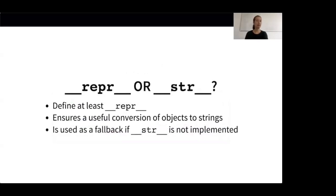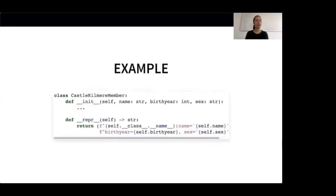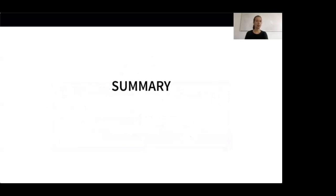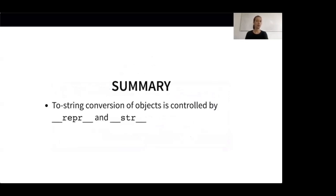Let's apply this knowledge and add a __repr__ method to our CastleKilmier member class. We implement our __repr__ method to hold all important information, like the name of the class, the name of the instance, the birth year and so on. This gives us a much nicer representation of our Bromley instance. The __repr__ method also allows us to recreate the Bromley instance from its string representation. To summarize: we have two methods for converting objects to strings which serve different purposes, and you should try to add at least the __repr__ method to your classes to ensure a nice representation when converting to strings.